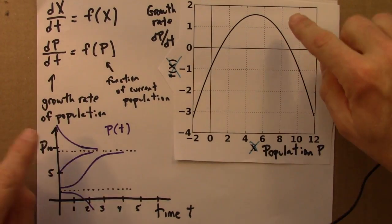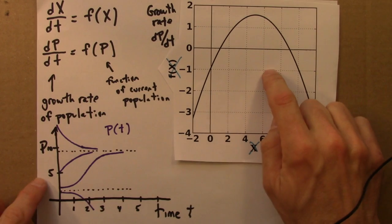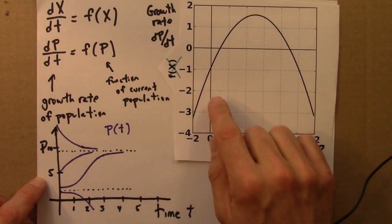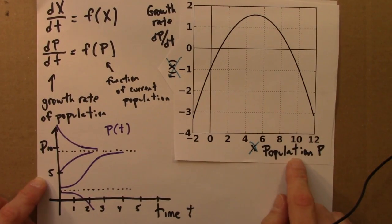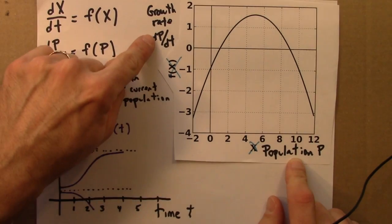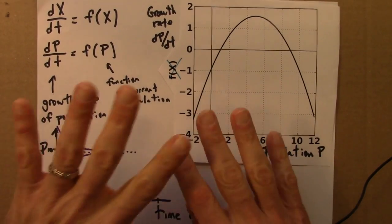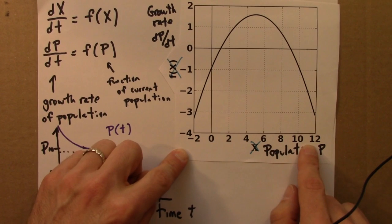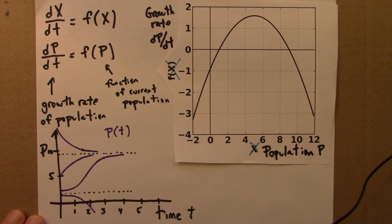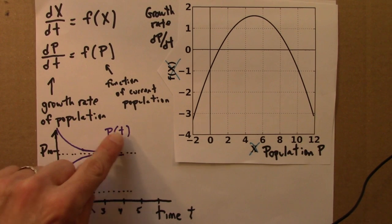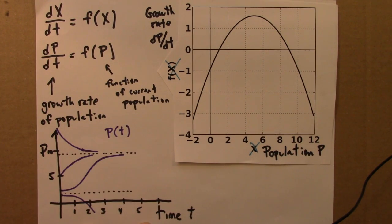So, let me just say a little bit, again, about these two types of graphs because it's really easy to get them confused. So, this is dp/dt as a function of p. Is the population growing or shrinking for a given population? So, there's no time on this axis. This plot is p as a function of time. How does the population vary as time goes forward?